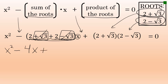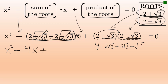The majority of the work in this problem will come from multiplying 2 plus the square root of 3 and 2 minus the square root of 3. When multiplying these binomials together: 2 times 2 is 4; 2 times negative square root of 3 is negative 2 root 3; the square root of 3 times 2 is positive 2 root 3; and the square root of 3 times negative square root of 3 — a positive times a negative is a negative — gives negative square root of 9.